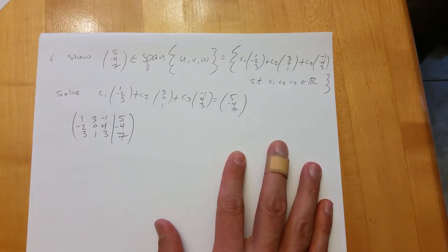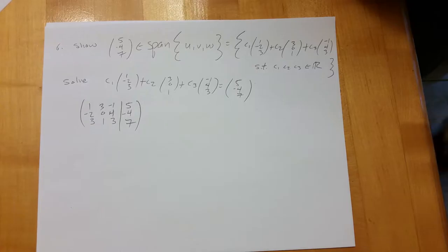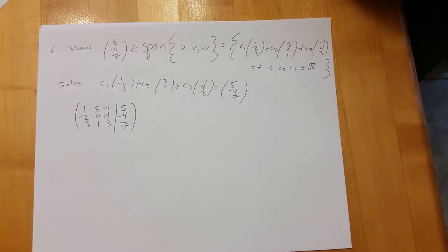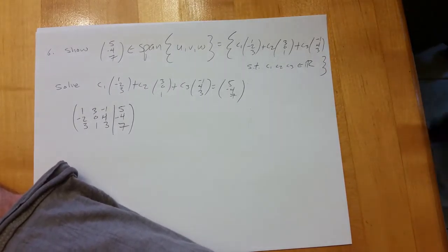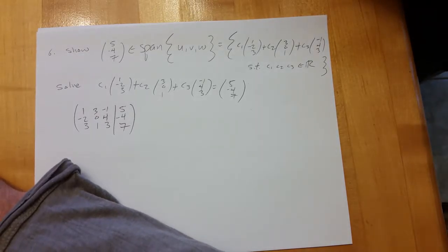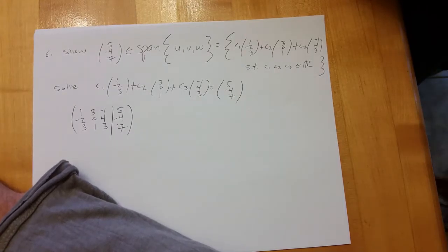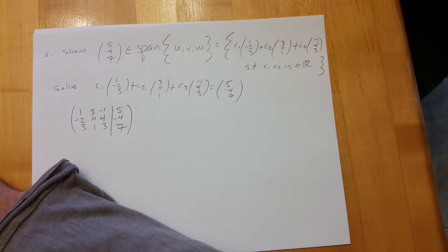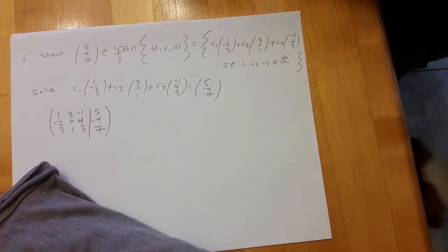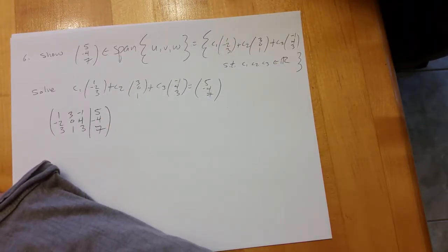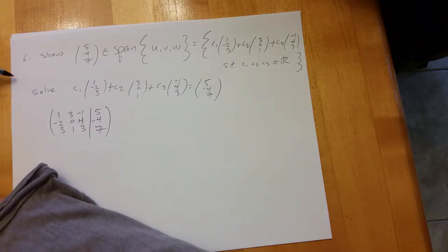So number six is setting up the matrix, and number seven is solving it. We'll do the row reduction. The instructor confirms the student can proceed, clarifying that problems 6 and 7 are linked — six sets it up and seven solves it.